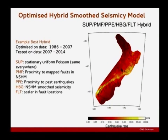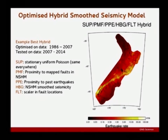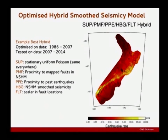Question from audience: Can you explain the color scheme? It's counterintuitive that yellow is a higher rank than red. Response: Yes, that's correct — yellow is the higher rate. Think of this as a relative rate; ignore the absolute numbers. Yellow is higher, and in this case the result is largely dominated — but not entirely — by fault locations.